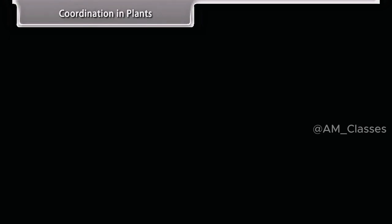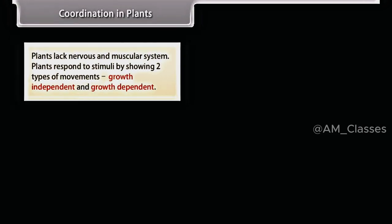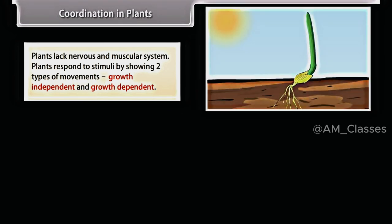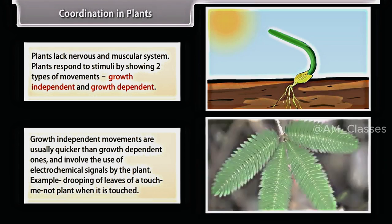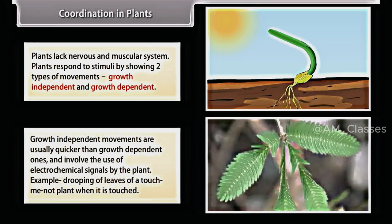Plants lack a nervous and muscular system. Plants respond to stimuli by showing two types of movements: growth-independent and growth-dependent. Growth-independent movements are usually quicker than growth-dependent ones and involve the use of electrochemical signals by the plant. For example, drooping of leaves of a touch-me-not plant when it is touched.